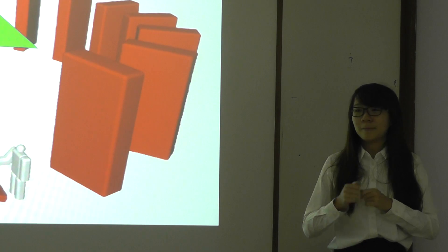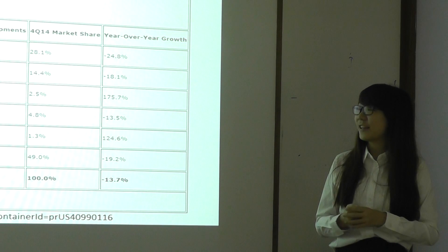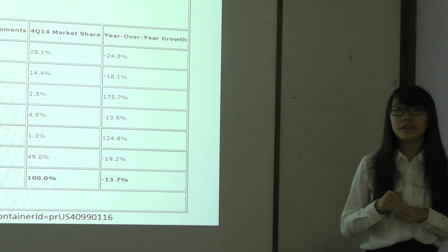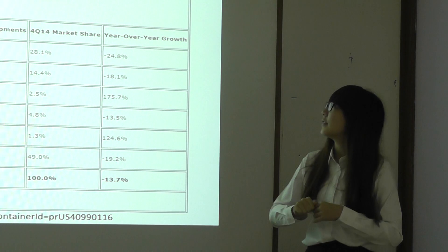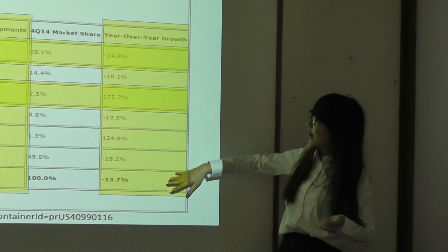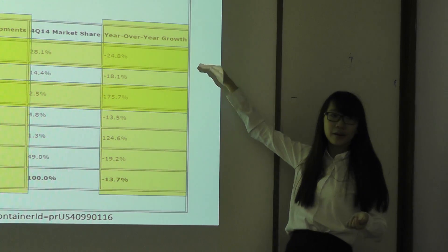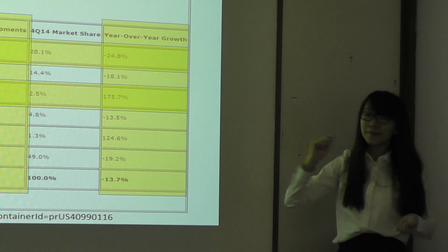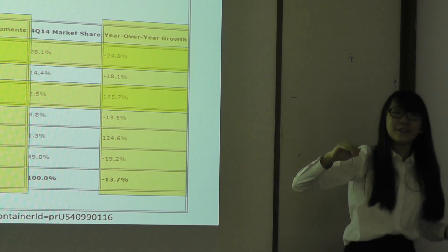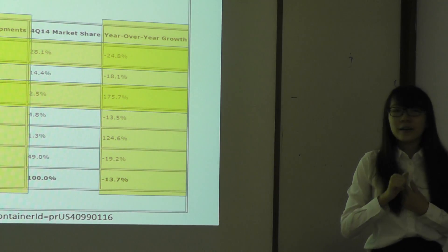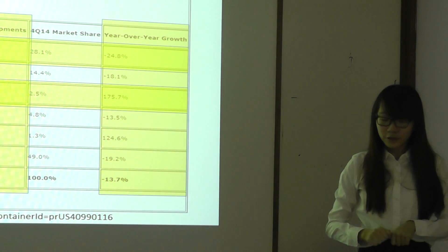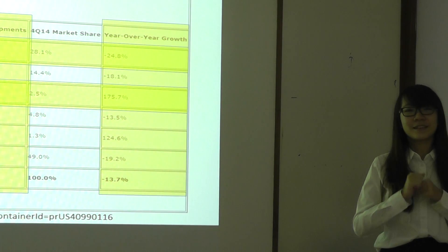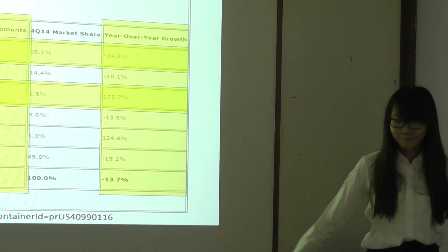In conclusion, we can conclude that the tablet industry is actually declining, if you see based on these statistics. Earlier, Pauline said that we think that the tablet industry is going to decline. Based on these statistics, you can see the year-over-year growth, everything is going down. If we were to focus on Apple and Amazon, Apple is actually making losses, and Amazon is actually making higher growth. However, we feel that the tablet industry can still sustain its maturity if they continue to fight towards the best cost business in the generic strategies. Thank you.